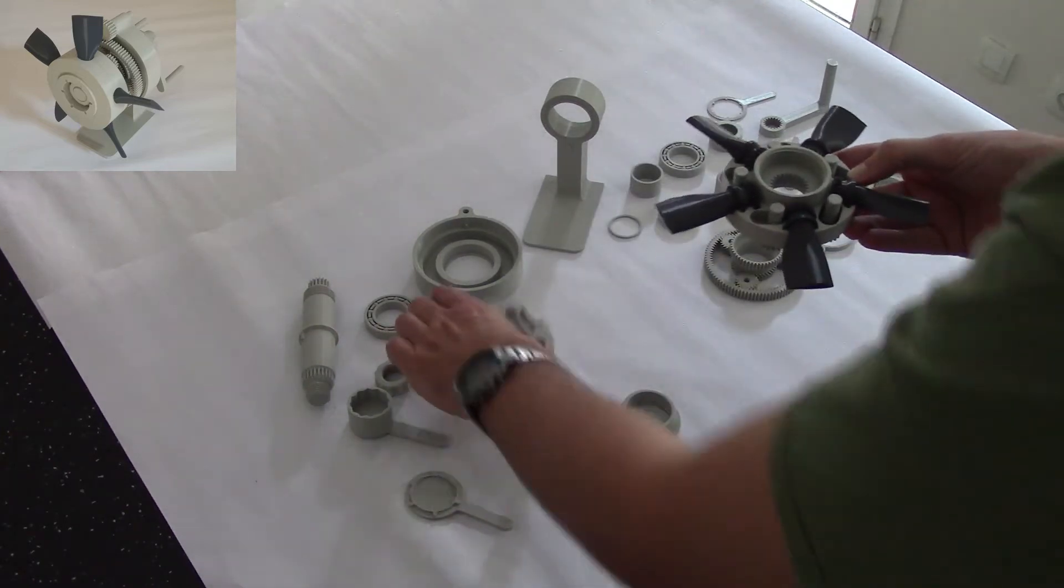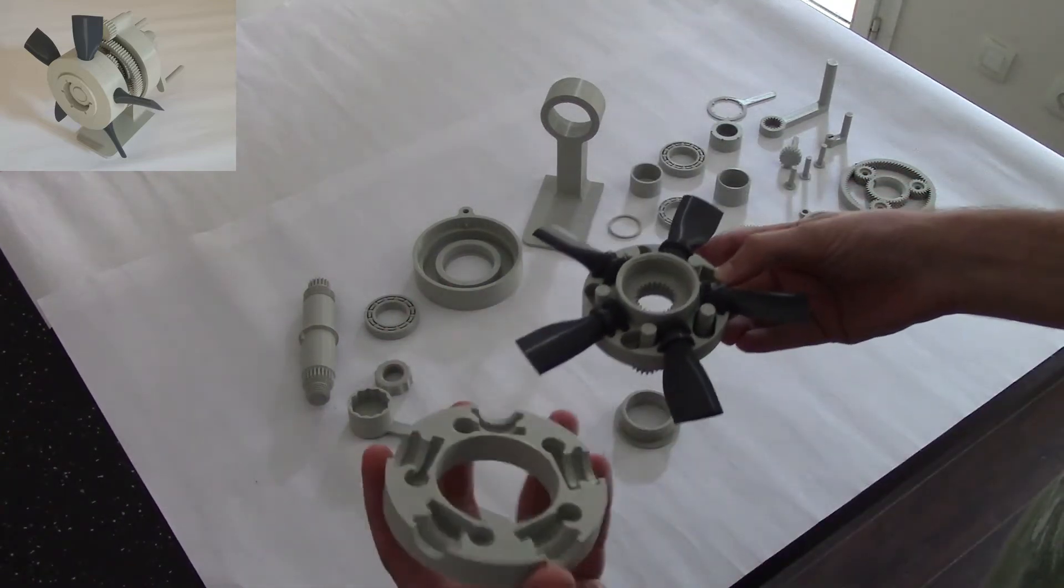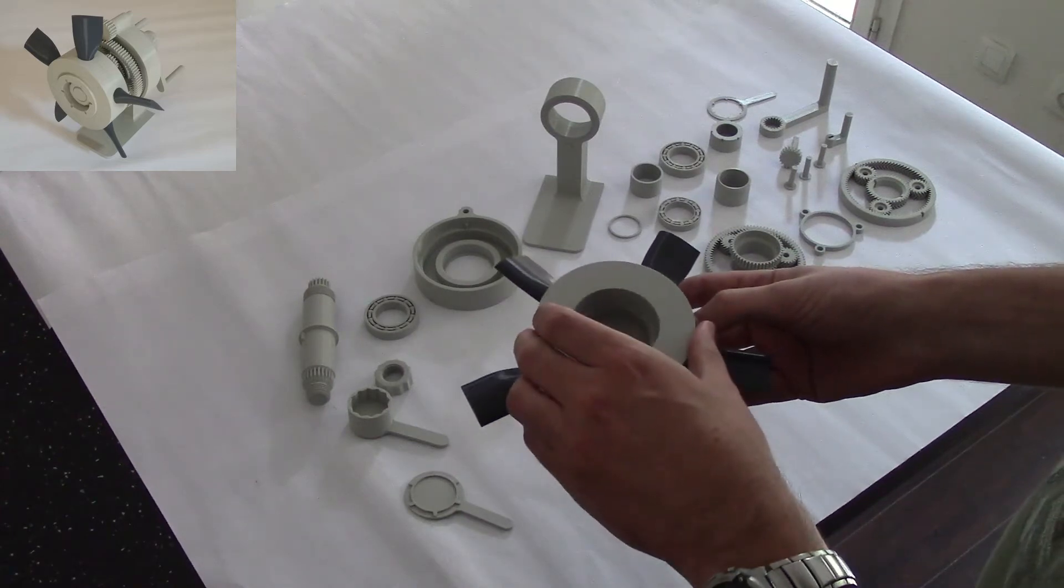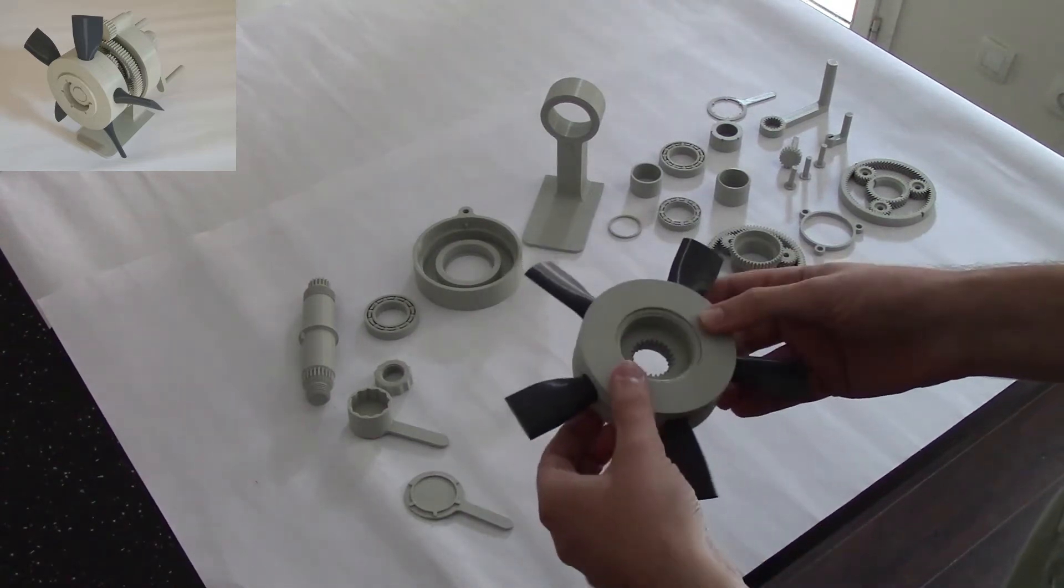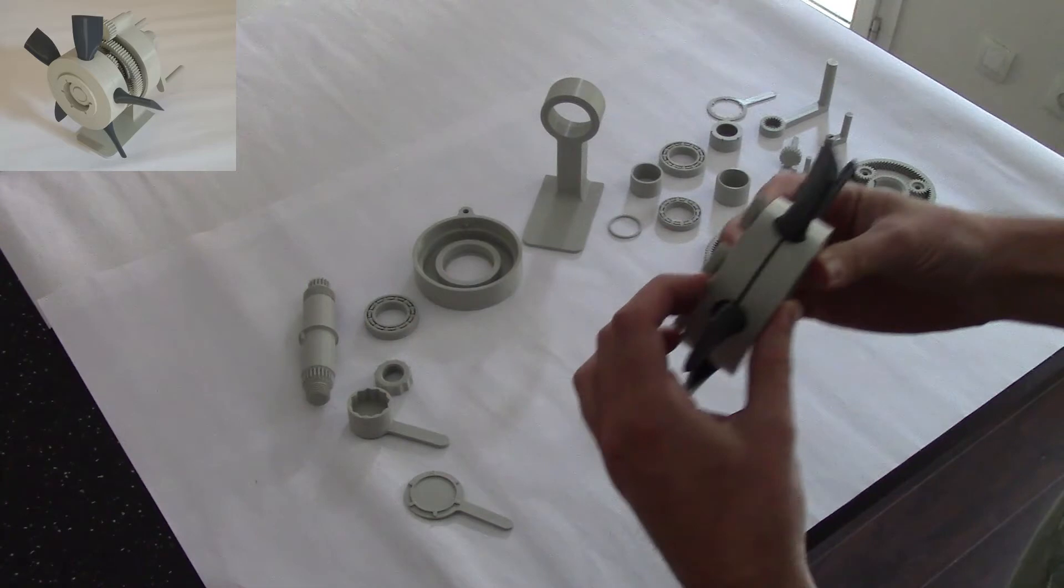To close it, you just take the front hub halves and place it on top, like so.